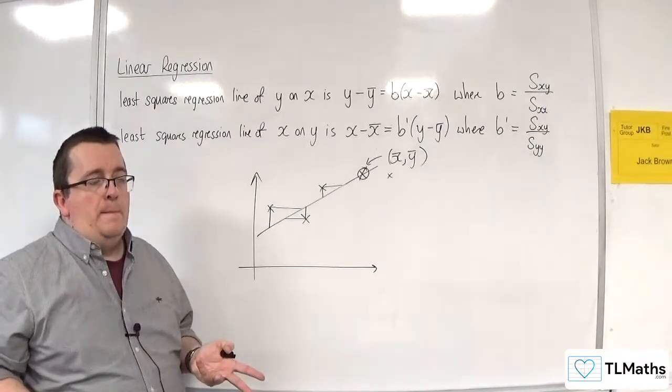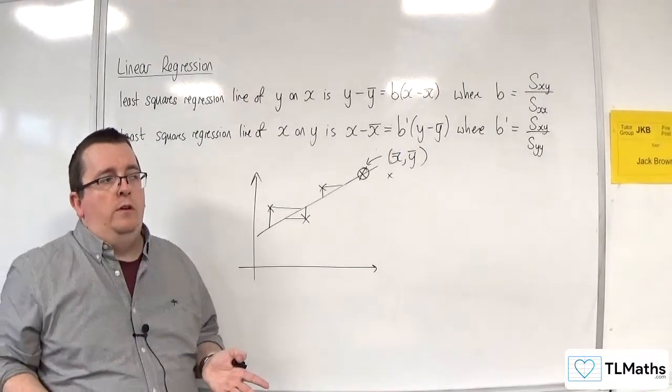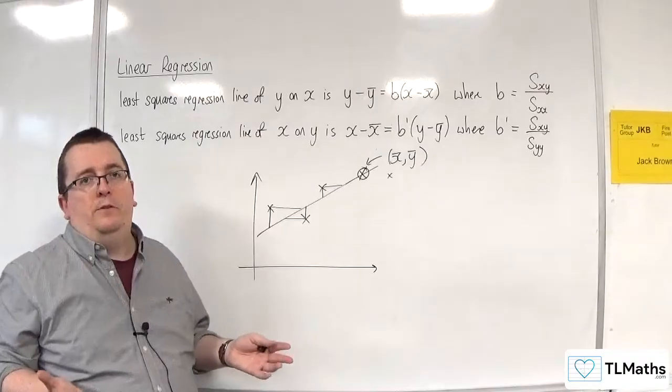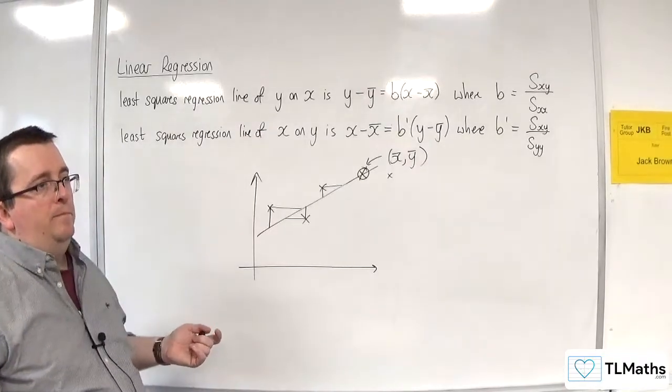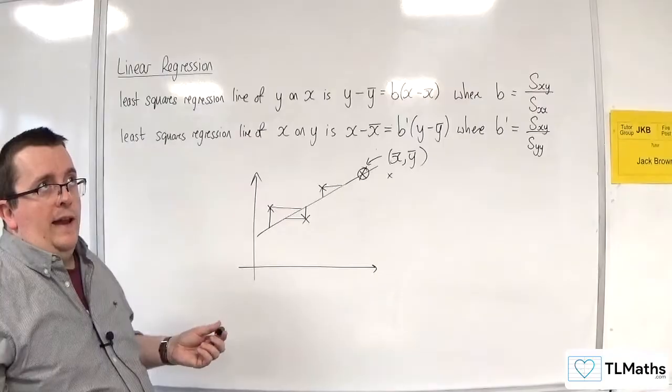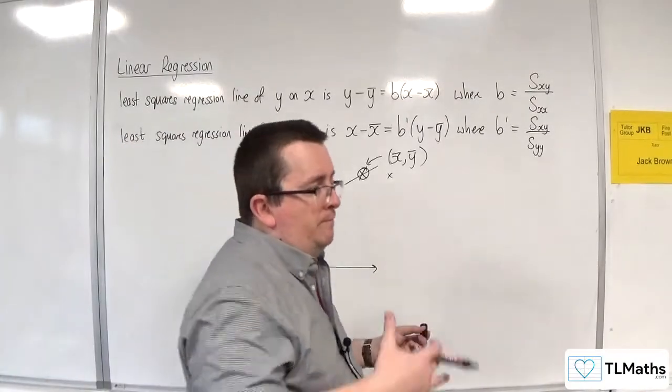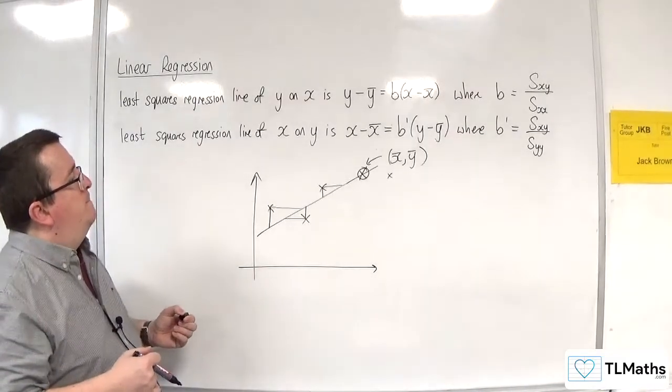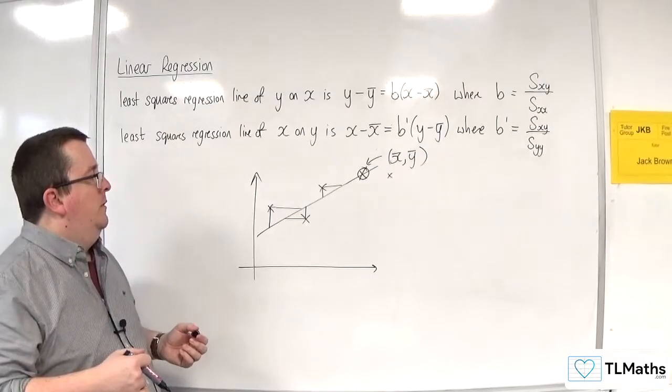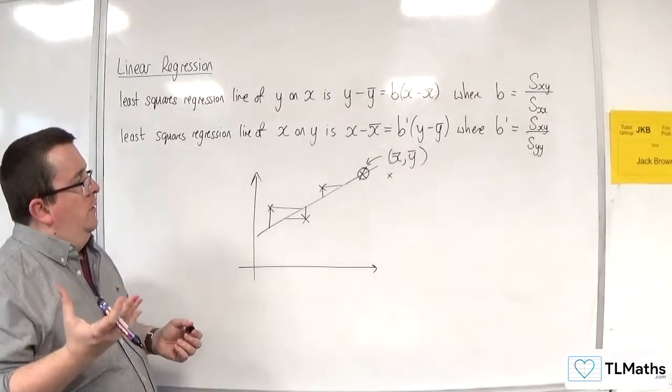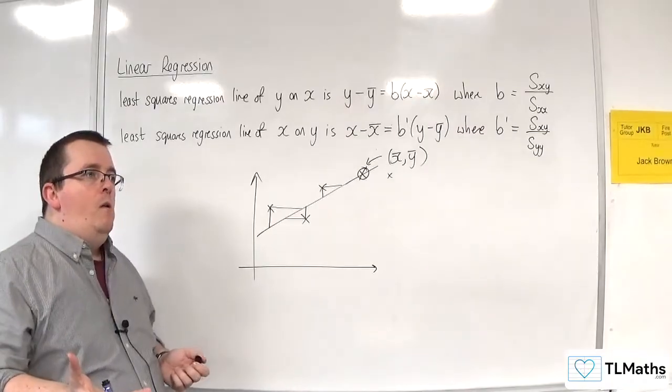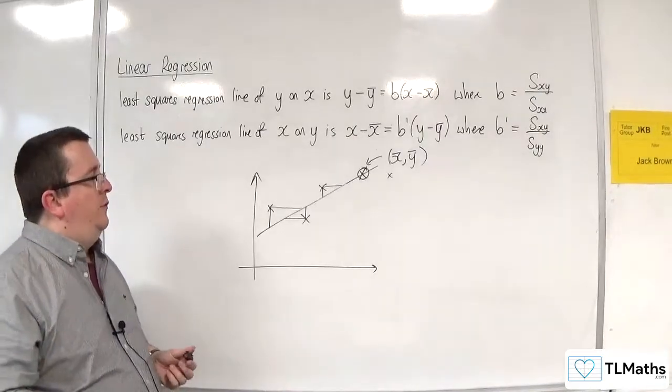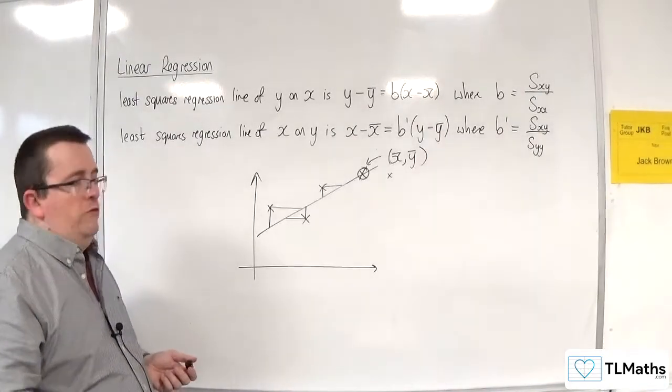That would only happen if the regression line you got was y equals x, for example. It would have to have that gradient. So y equals x would definitely be one. It would just have to be y equals x.